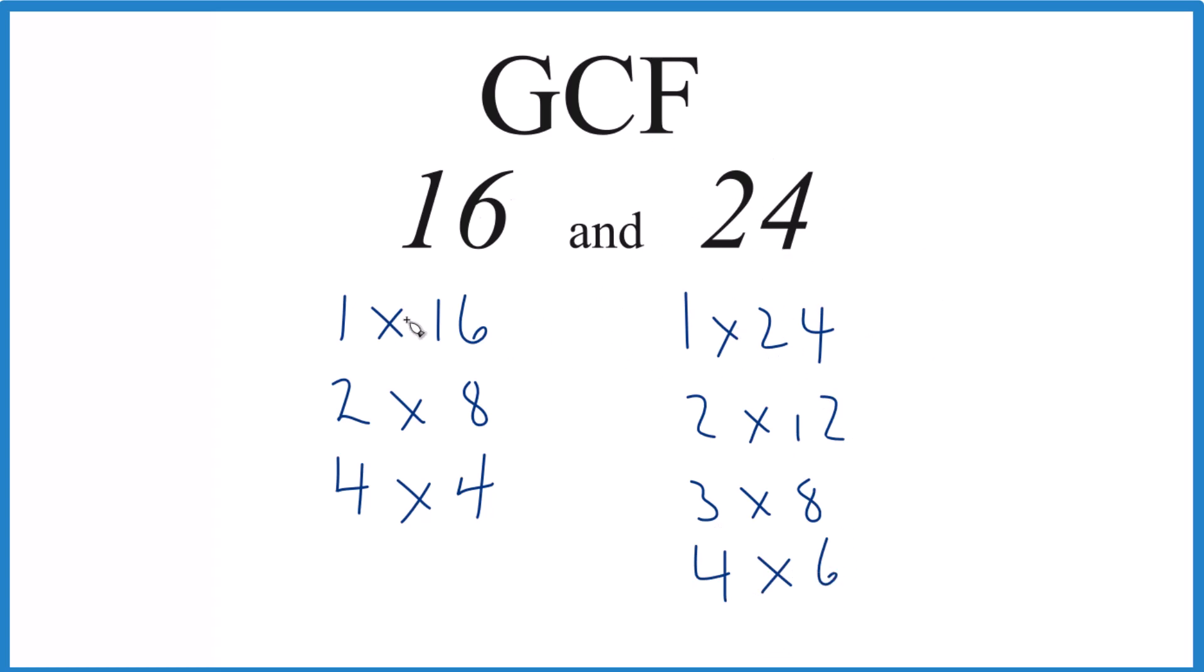So now we can compare them. We can see we have a 1 on both sides, but then we have a 2, so that's even greater. We don't have a 3, but we have a 4. But the greatest factor, that's the 8 there. That's the greatest number in common with 16 and 24.